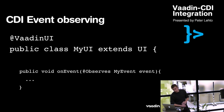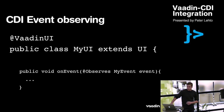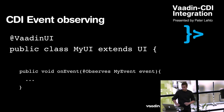When you want to actually receive an event, you just implement a method that has the @Observes annotation in the method signature, and you receive your event and process it the way you want.